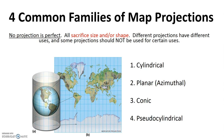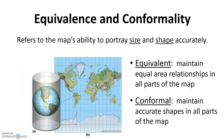Before we show examples of the different families, let's review two additional terms: equivalence and conformality. Equivalence and conformality refer to a map's ability to portray size and shape. Some maps are considered conformal, some equivalent, and some are compromises of the two. Equivalent maps are able to show size correctly through all regions of the map, but shape is sacrificed. On the other hand, conformal projections are able to maintain shapes in all parts of the map, but size is sacrificed. So in this example of the cylindrical projection — is it equivalent or conformal? What is shown accurately: size or shape?